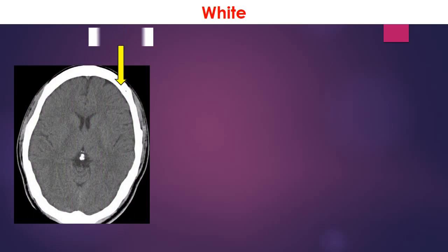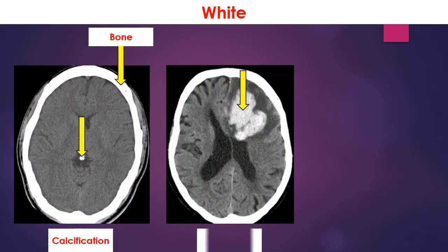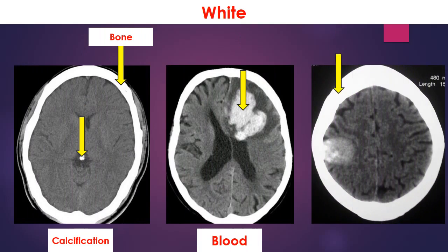Tissues which can be seen white on CT brain are bone, calcification, blood, and tumor.